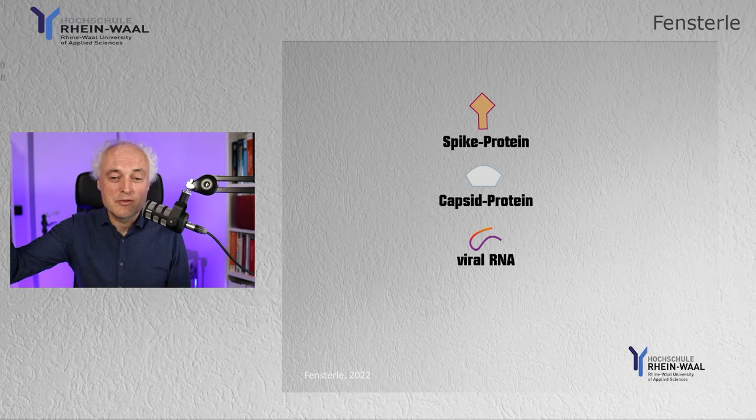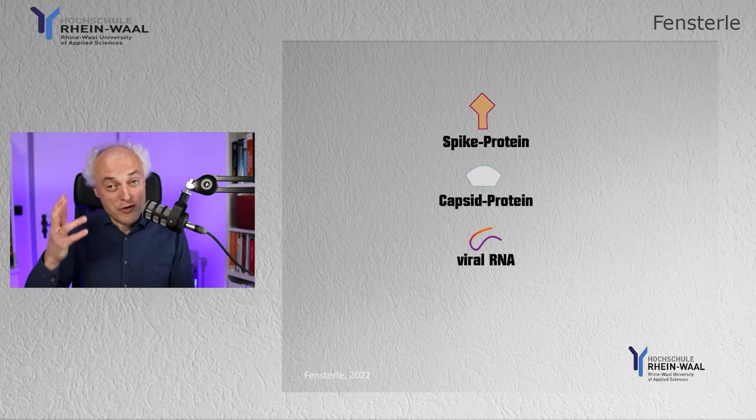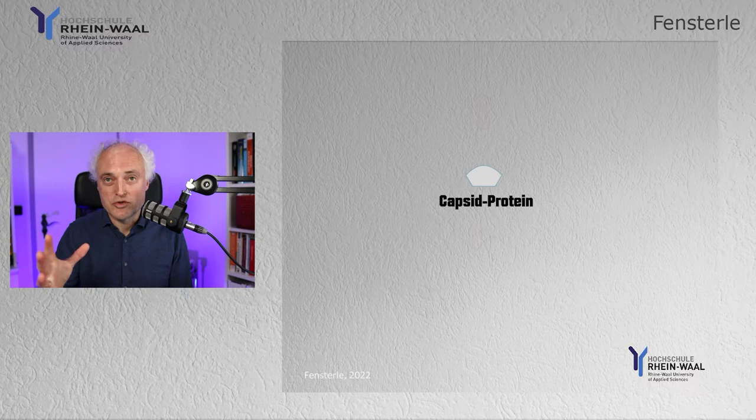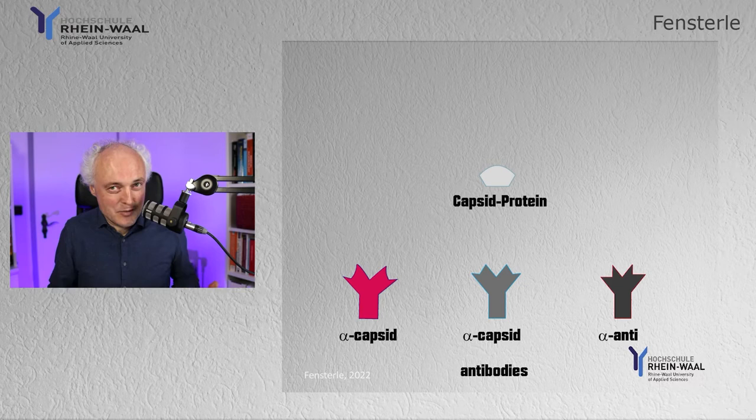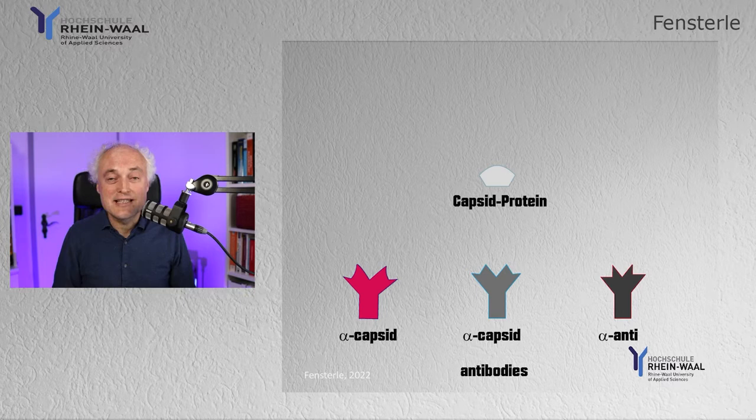Very simplified, we have the spike protein, which is the outer protein, separated from the capsid proteins and the RNA. For the corona antigen test itself, just the capsid protein is used in most tests. What we need in addition are certain antibodies — usually so-called monoclonal antibodies, which have just one specificity.